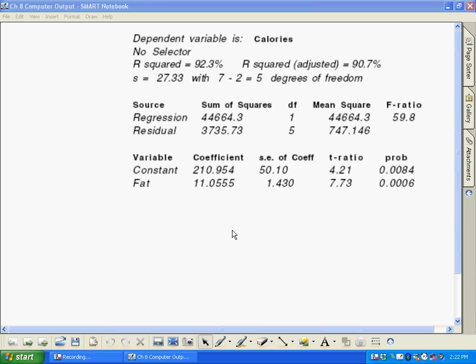One of the important ideas when we're doing linear regression is there are different statistical packages out there - software packages you can use on your computer - and they're going to spew out something like this which we call computer output. When you look at this it may look a little busy.